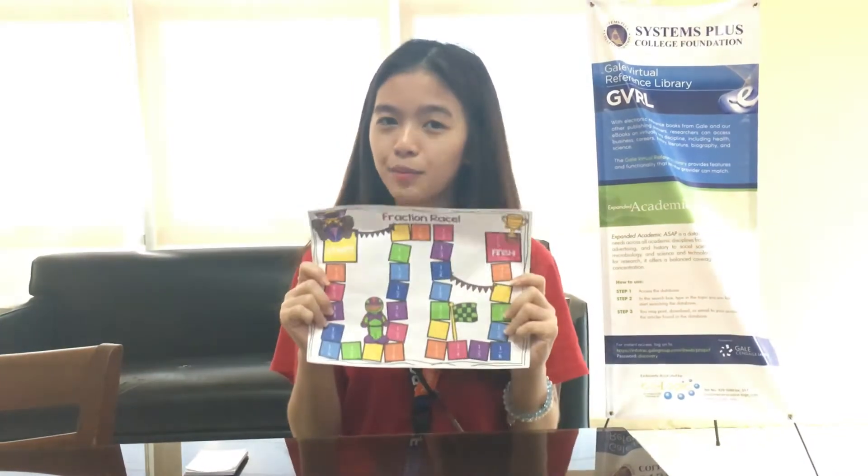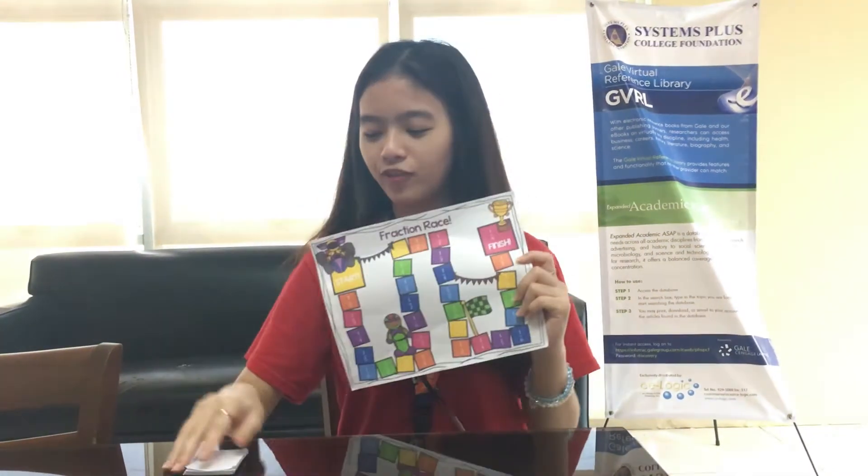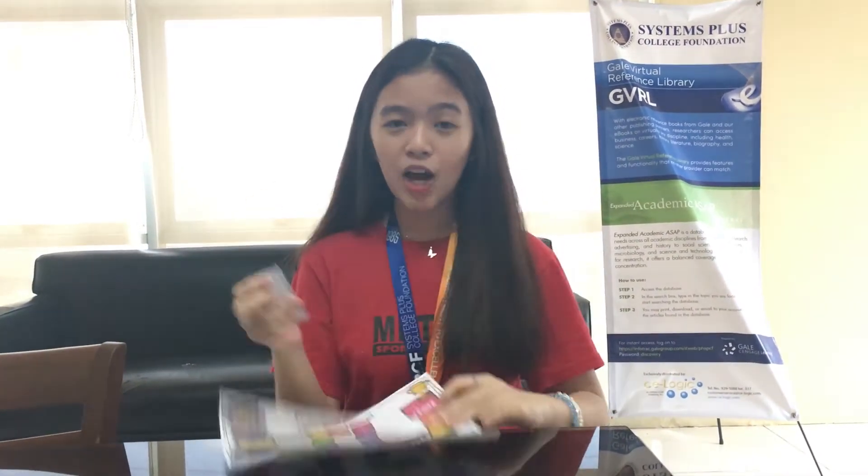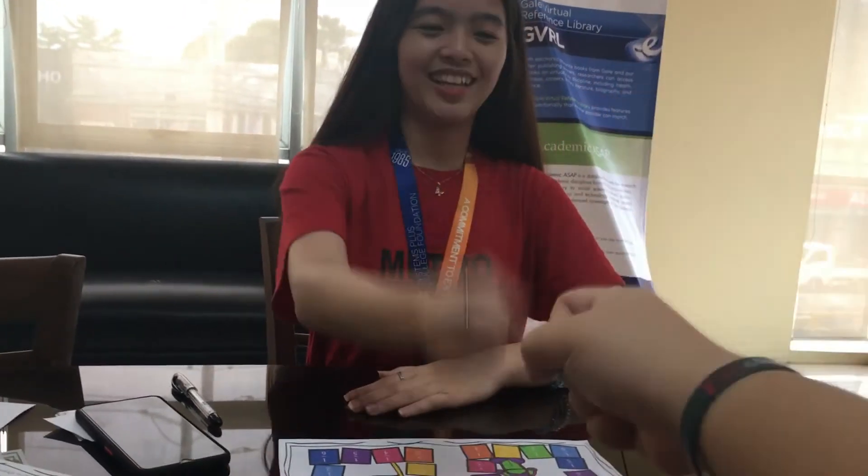As you can see, we have here the game board and of course the flash cards. Now let's proceed to the game. Here is how to play: first, the game begins by playing jack — the winner will start the game.